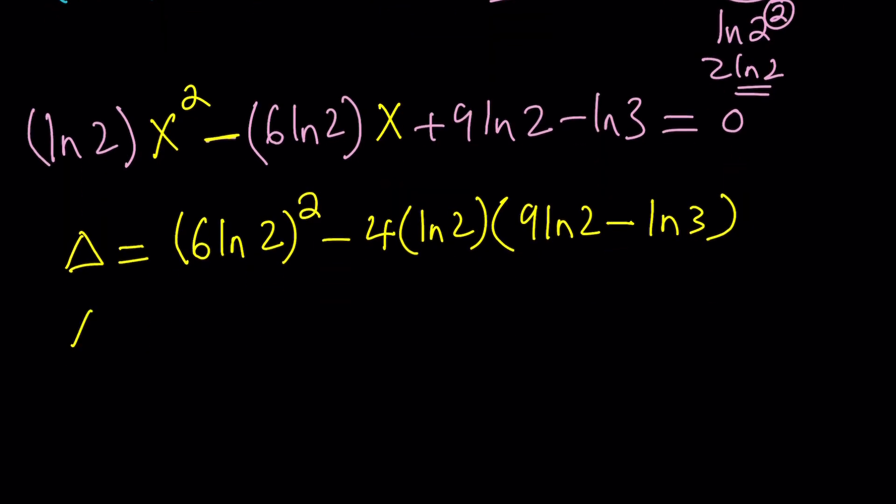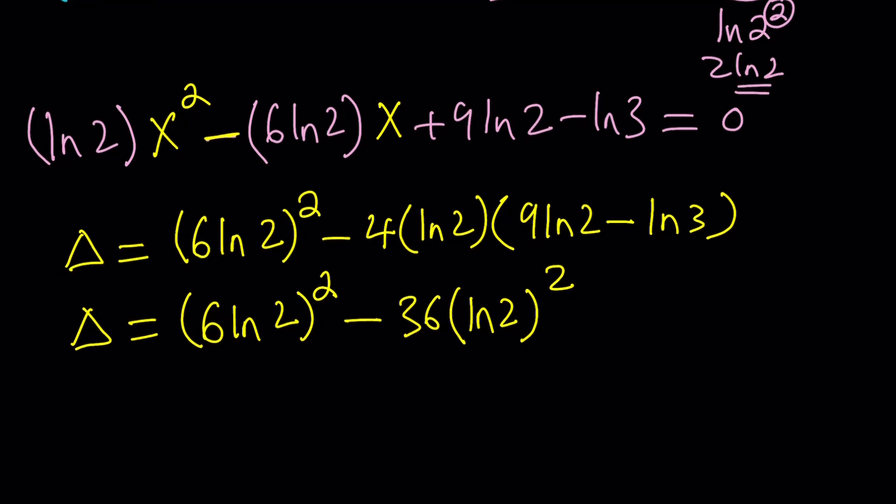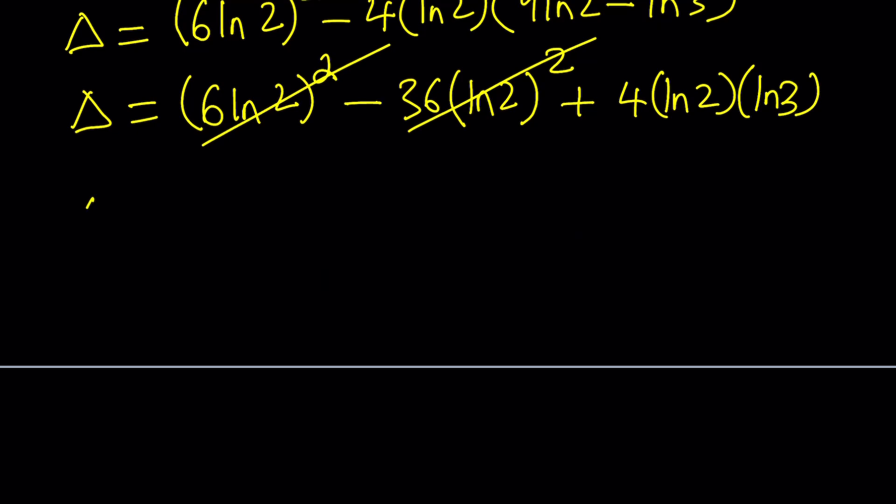Let's square this and simplify as much as possible. We have 6 ln 2 squared. When we distribute this gives us 36 ln 2 squared. Notice that negative 4 times 9 is negative 36 and ln 2 times ln 2 is ln 2 squared and then plus 4 times ln 2 times ln 3. The double negative turns into a plus sign. But notice that 6 squared is the same as 36 so these two terms are going to cancel out, leaving us with a nicer delta which is 4 ln 2 times ln 3.